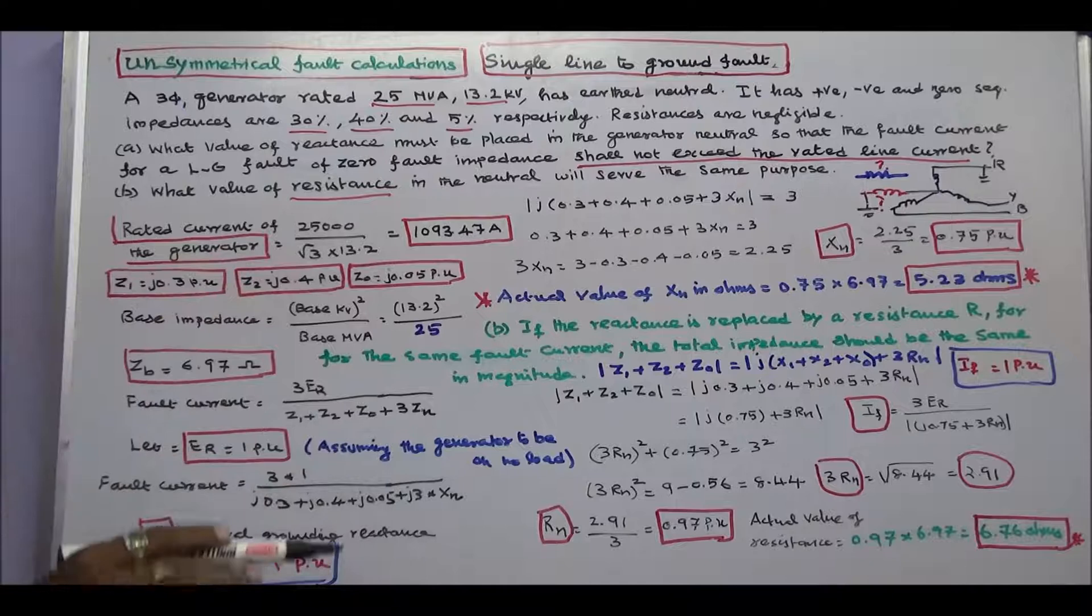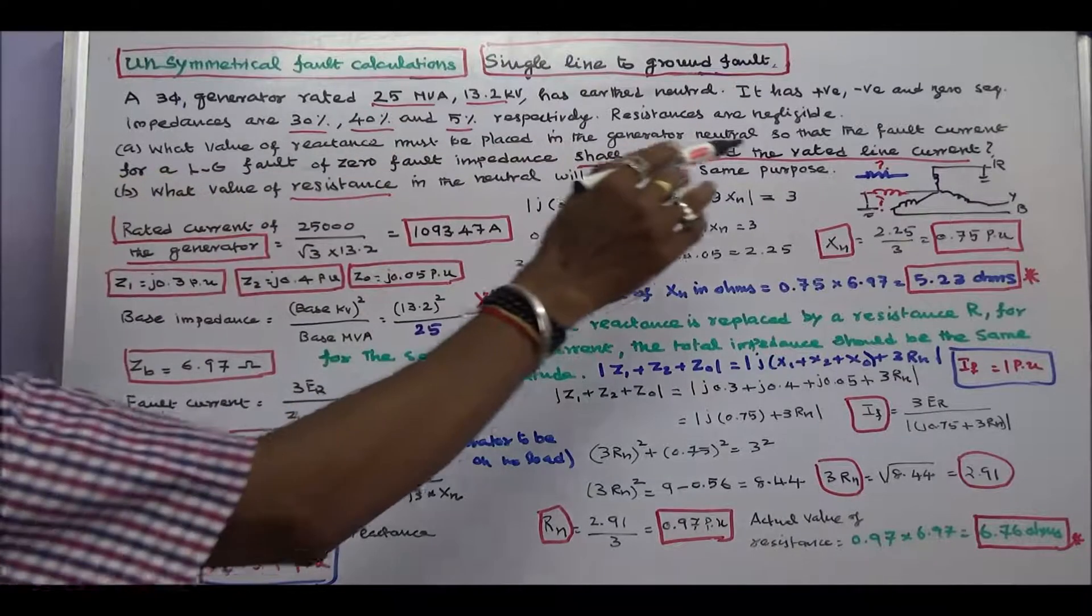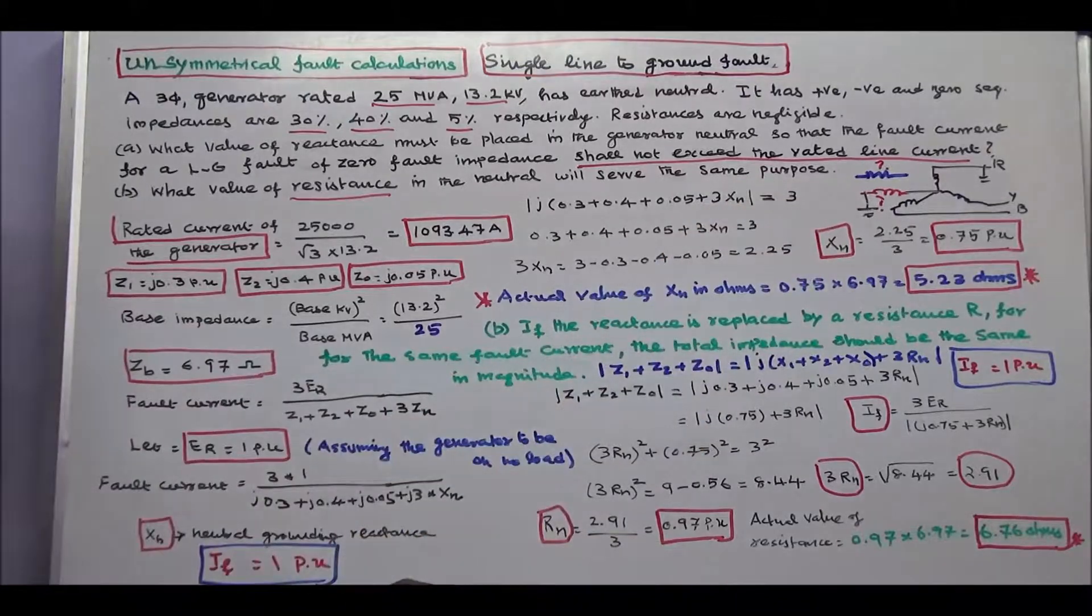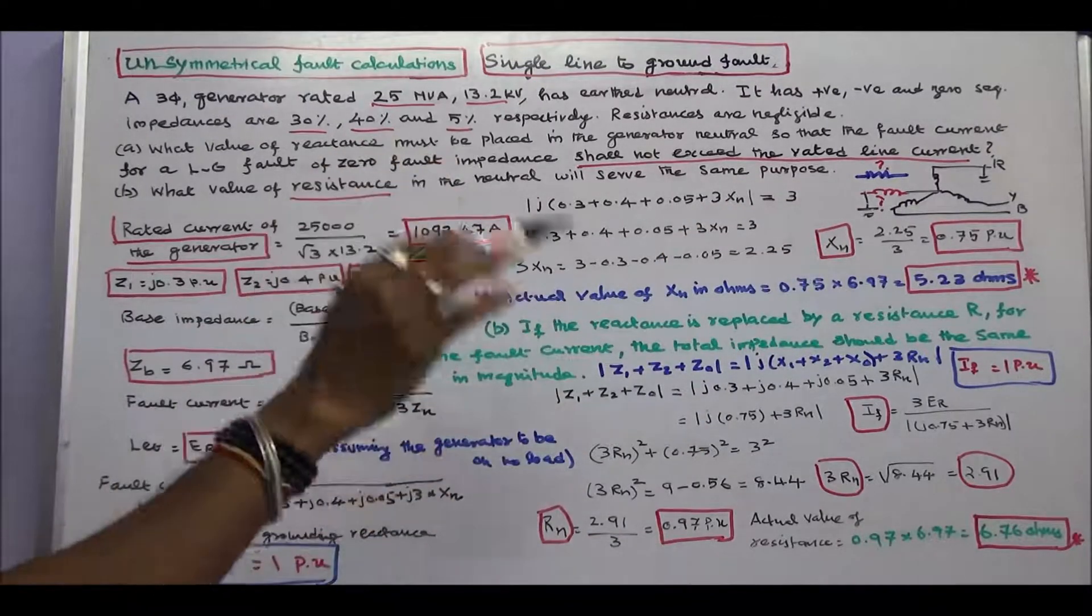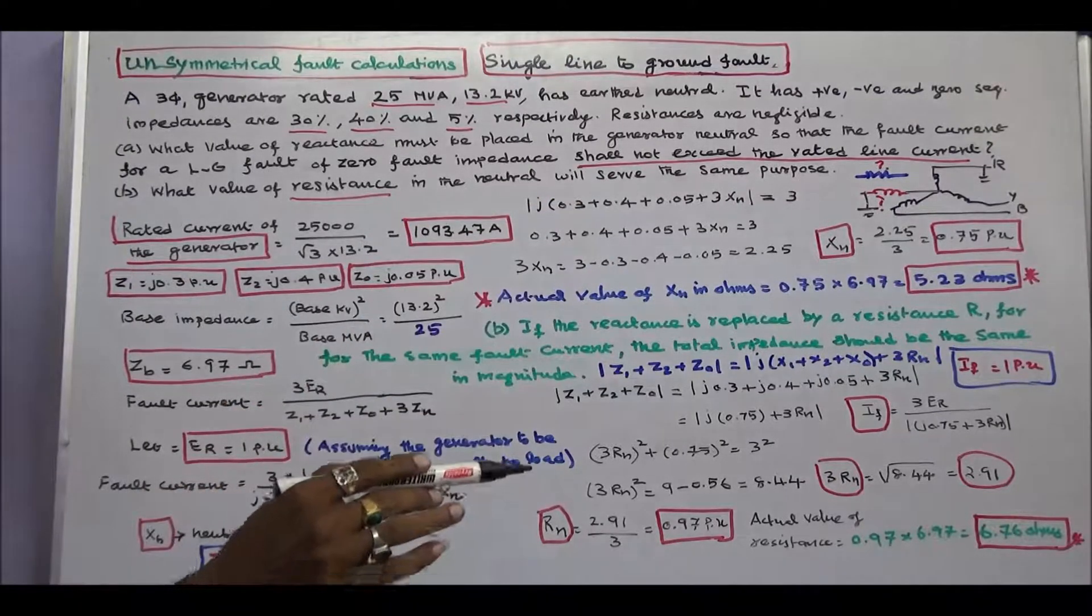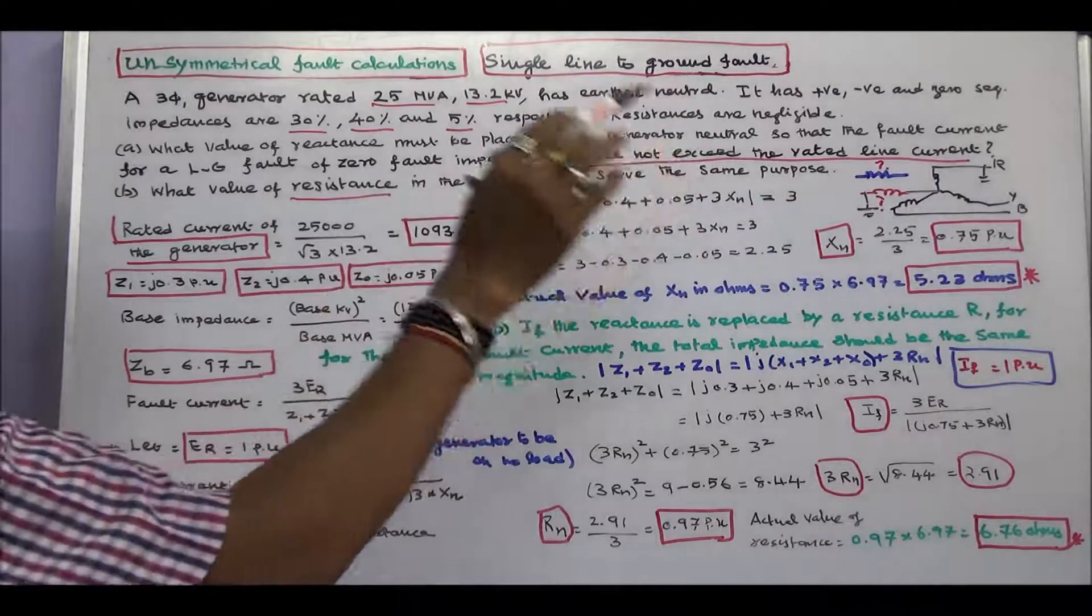The question is, what value of reactance must be placed in the generator neutral, so that the fault current for a line to ground fault of zero fault impedance shall not exceed the rated line current?